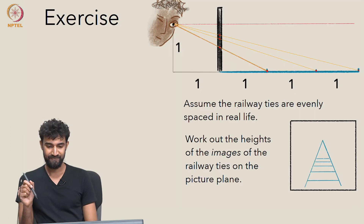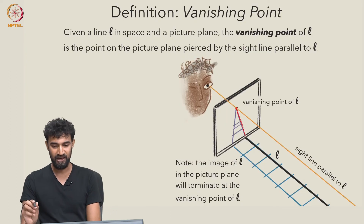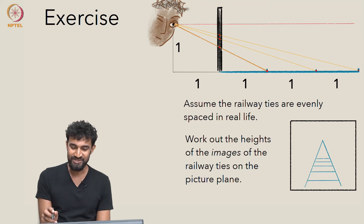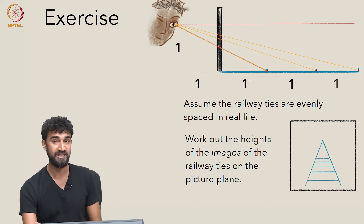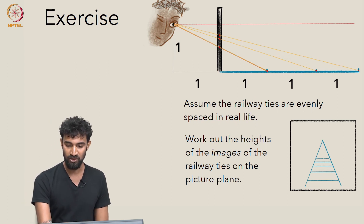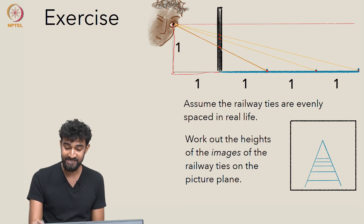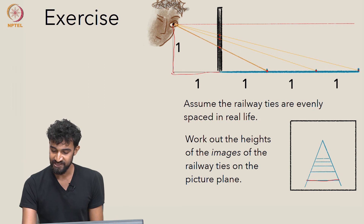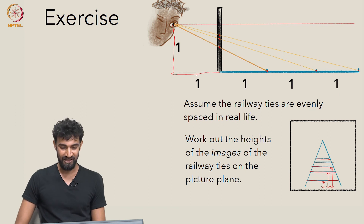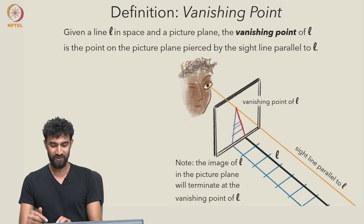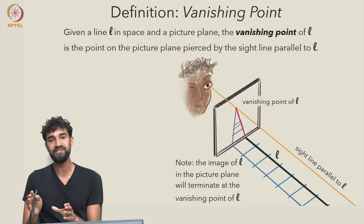As a quick exercise, you can assume the railway ties are evenly spaced — say one unit between them — and that our observation point is one unit from the picture plane and one unit up from the ground. In this scenario, can you work out the heights of the images of the railway ties in the picture plane using this schematic diagram? Hopefully this answers the question of why infinitely long lines appear to terminate.